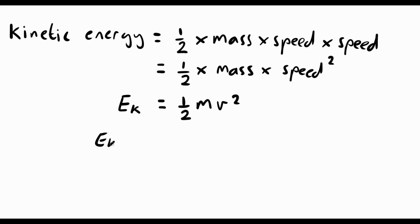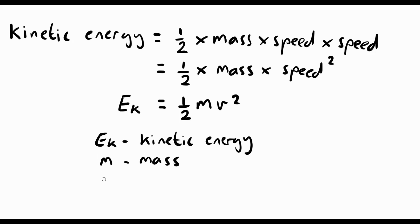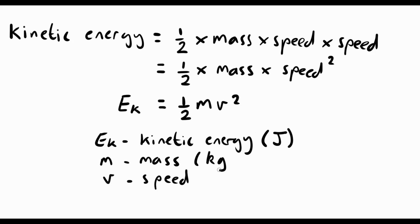We can write down what the symbols mean: Ek is kinetic energy, m is the mass of the object that's moving, and v is the speed of the object that's moving. We have to be careful with the units: kinetic energy is just another type of energy, so the units are joules. Mass is always measured in kilograms — if the question gives it in grams, you must convert it to kilograms. Speed is always measured in meters per second.